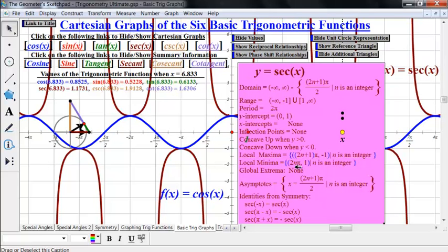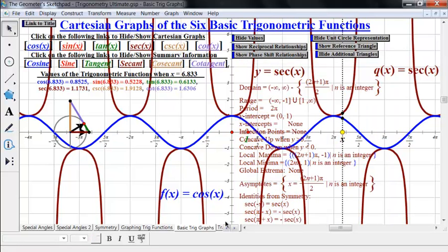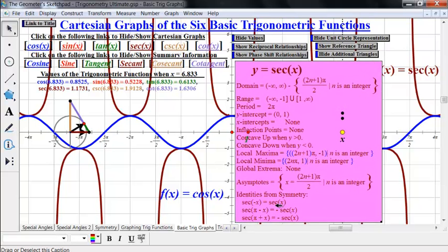No global extrema. We already talked about the asymptotes. Now what about symmetry? Your symmetry stuff is basically the same as it was for cosine. We have our reflective symmetry around the y-axis—that's going to tell us that it's an even function, that secant of minus x is the same thing as secant of x. We're going to have secant of pi minus x is the opposite of secant of x, and secant of pi plus x is also the opposite of secant of x.